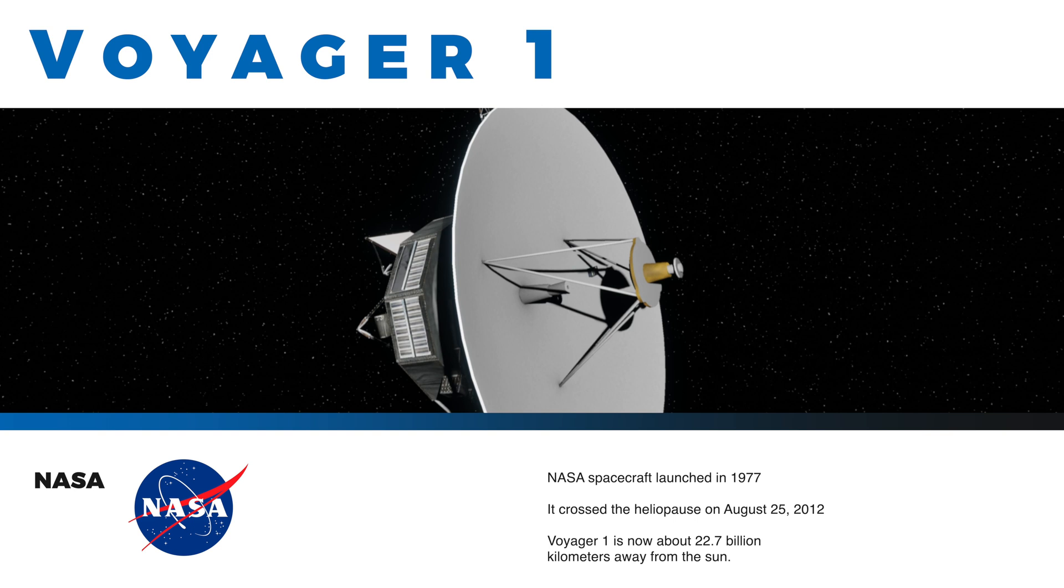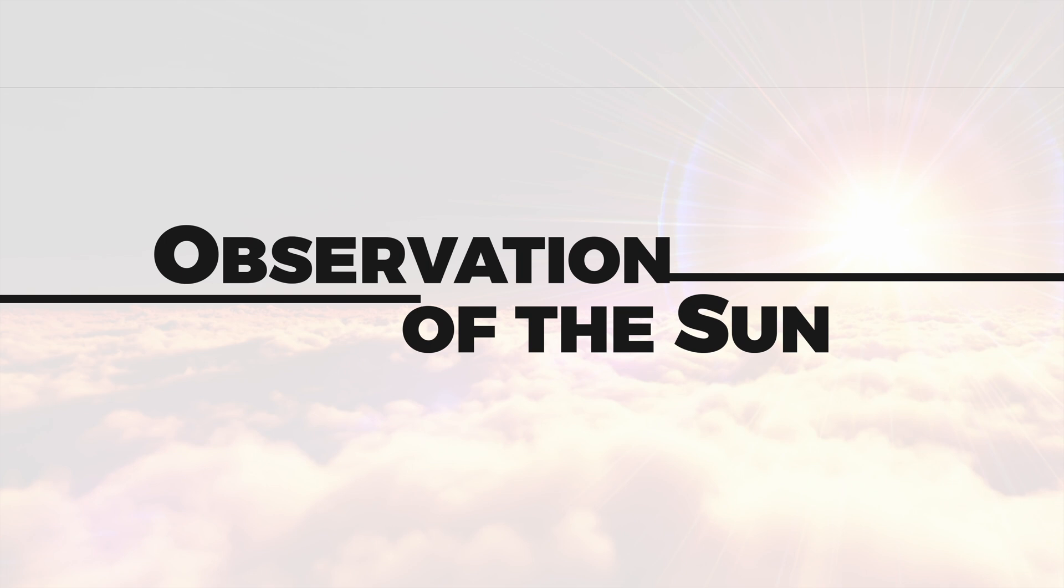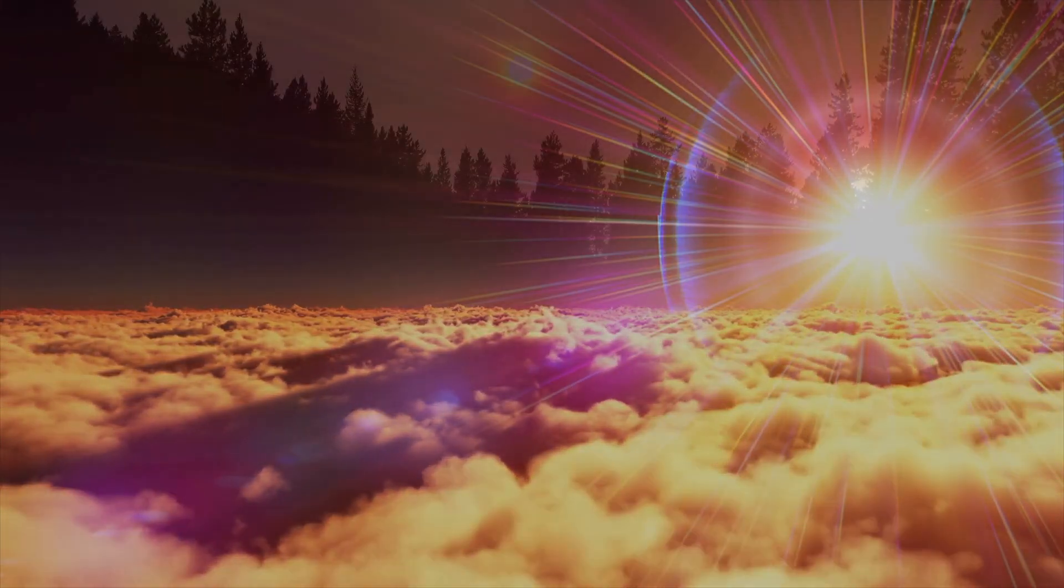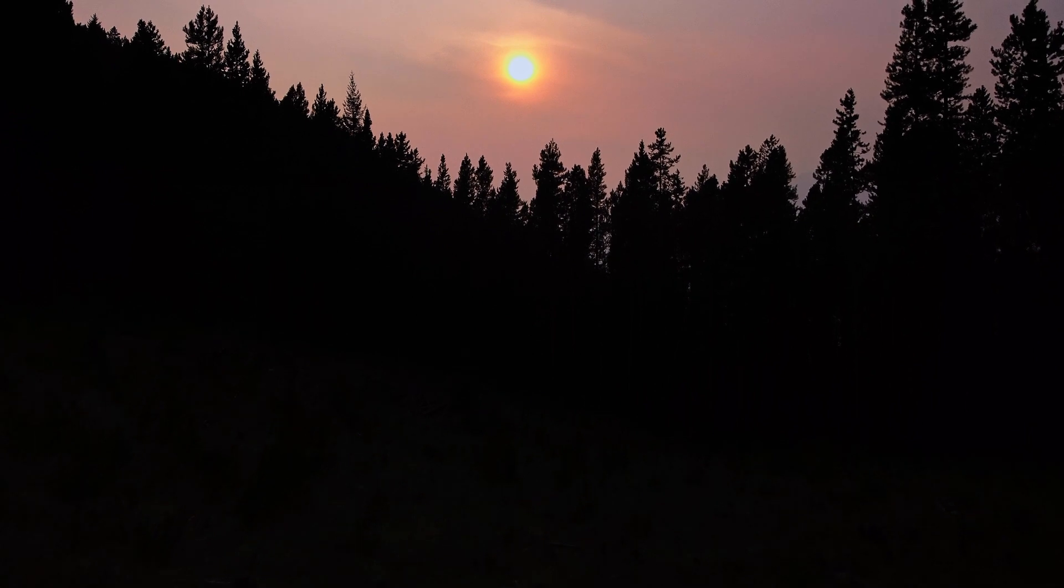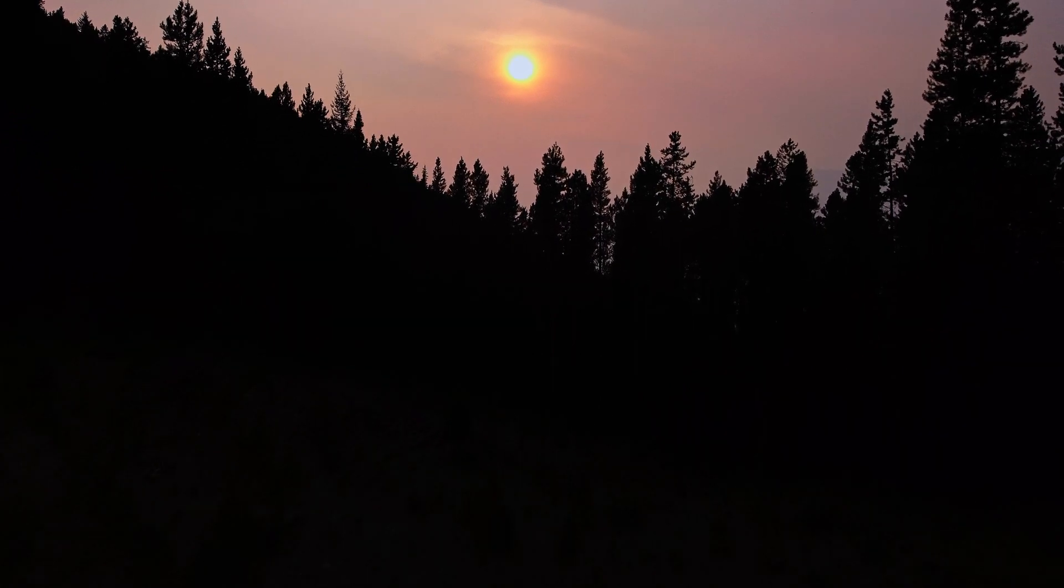Voyager 1 is now about 22.7 billion kilometers away from the Sun. The Sun can be observed during the day when it is visible in the sky. However, it is important to take appropriate protective measures to avoid eye damage. Directly viewing the Sun can cause permanent eye damage.